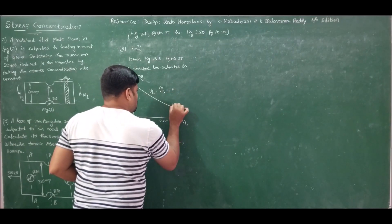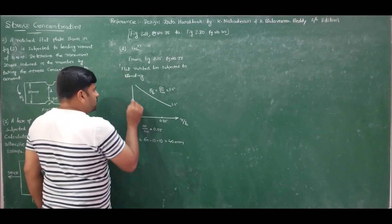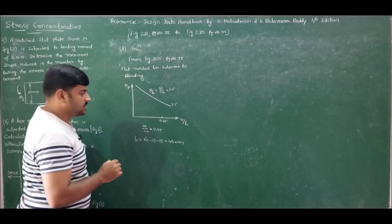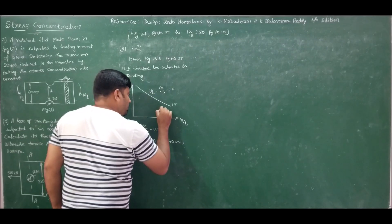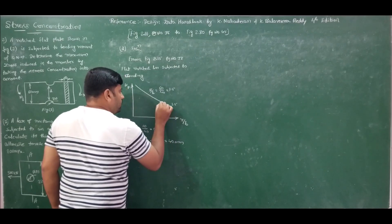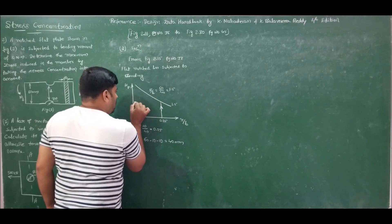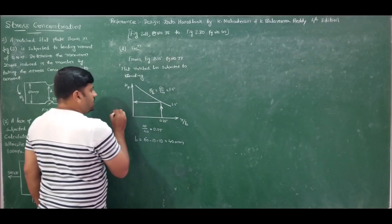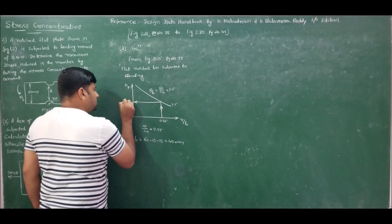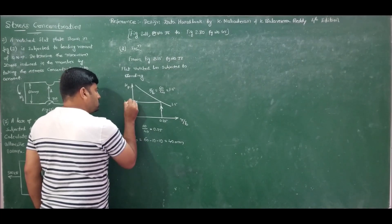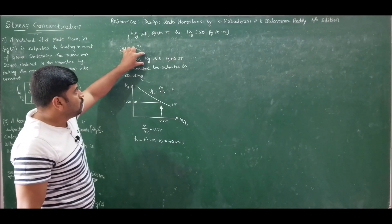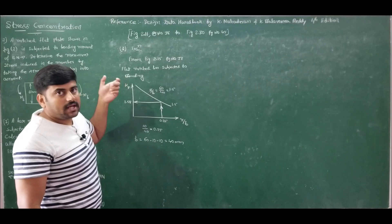Take the curve for B/b = 1.5. From x = 0.25, move up to intersect the 1.5 curve, then come horizontally to the left to intersect the y-axis. The theoretical stress concentration factor Kt is found to be 1.58, from Figure 2.15, page 38, for a notched flat bar subjected to bending.